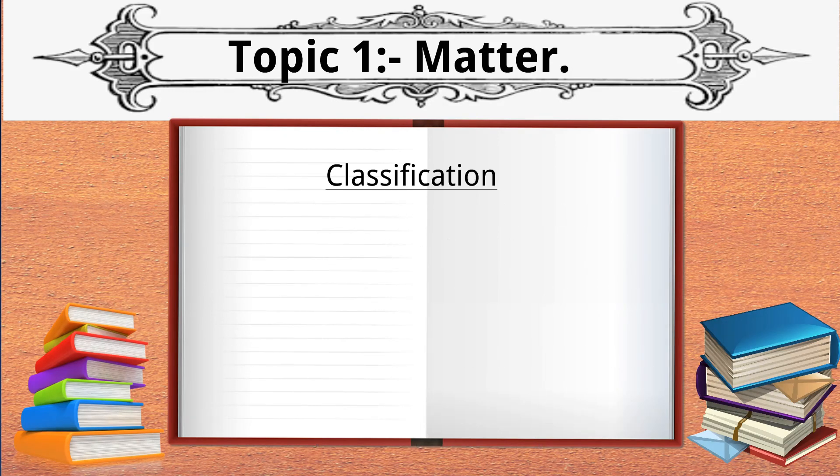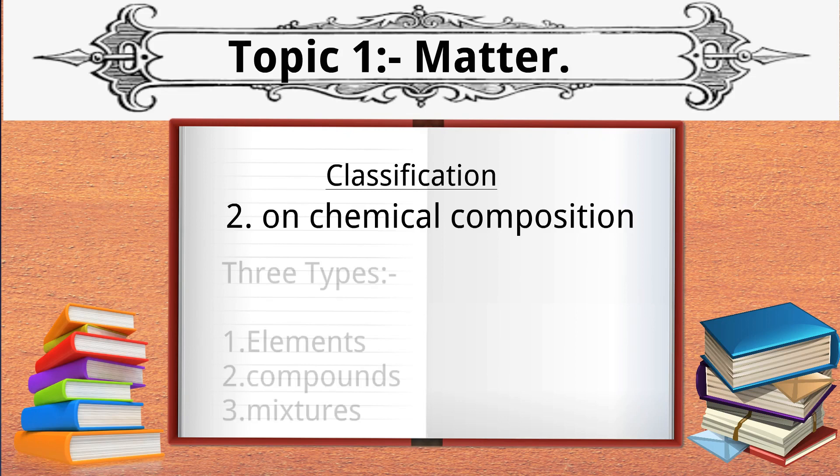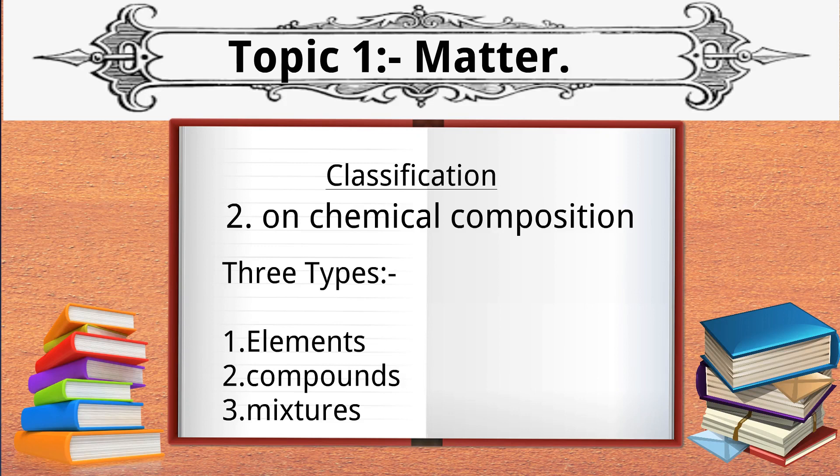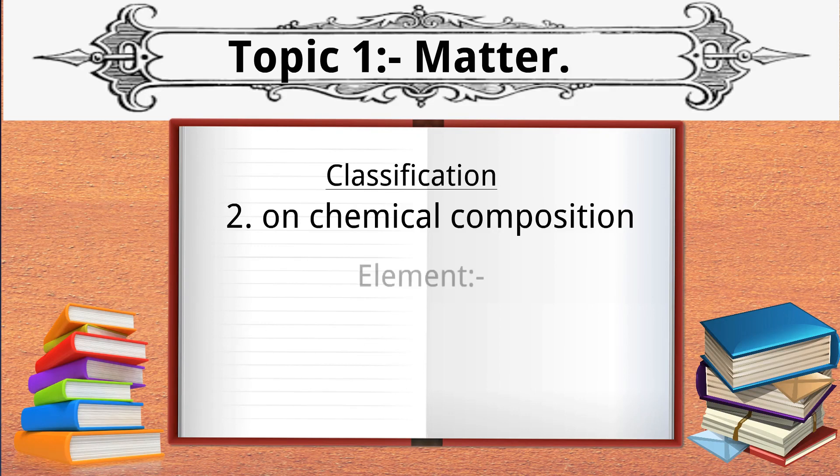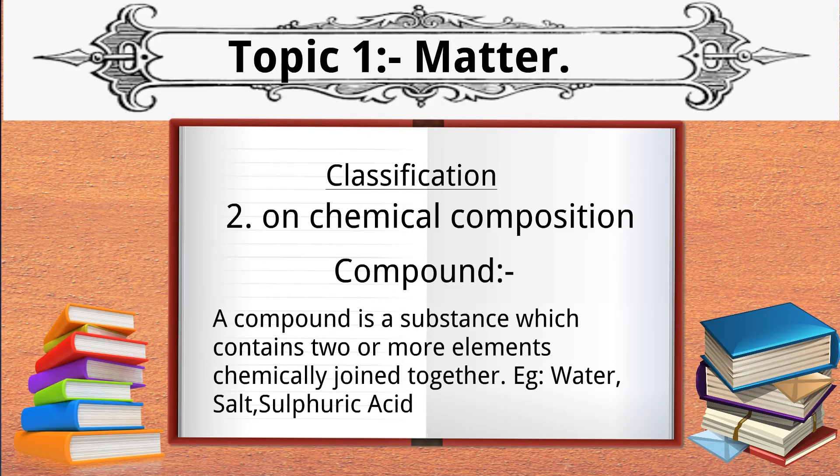Now let's see classification of matter on the basis of chemical composition. On this basis, matter can be divided into three types: element, compounds, and mixture. An element is a substance which cannot be split into two or more chemically simpler substances. Examples: hydrogen, oxygen, copper, iron, aluminum, carbon.